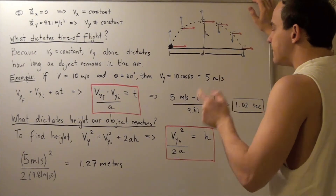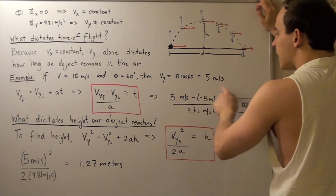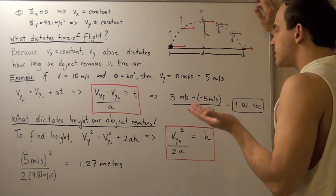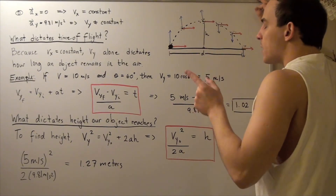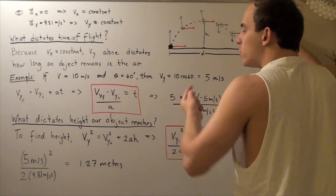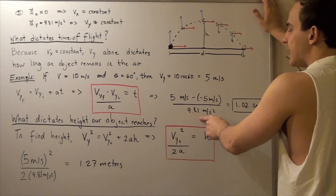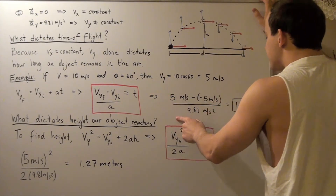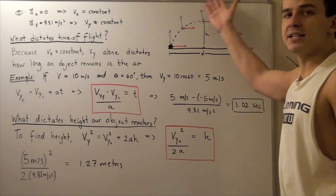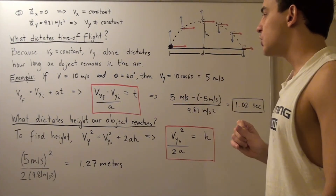Notice that I said my initial velocity was negative and my final velocity was positive to get this result. Alternatively, I could have said my initial velocity was positive and my final velocity was negative — I would get the same result: negative 5 minus 5 gives negative 10, and dividing by negative 9.81 gives 1.02 seconds. The direction you choose for positive and negative is relative — it's whatever you want, as long as the directions are consistent throughout your calculation.